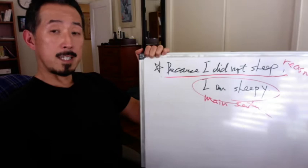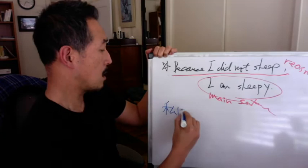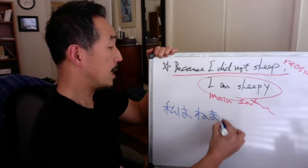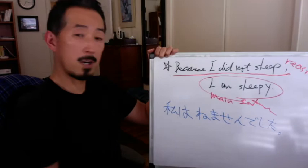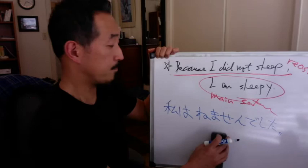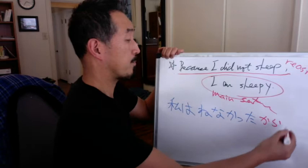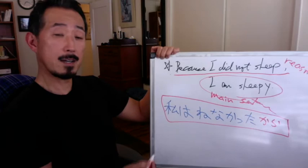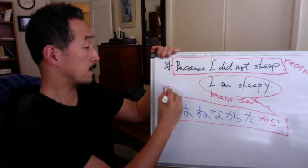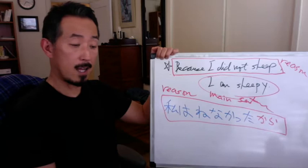Can you make this sentence: 'Because I did not sleep, I'm sleepy'? The reason is I did not sleep. 私は寝ませんでした — but you have to use short form. The short form past tense negative is 寝なかった. So: 寝なかったから. 私は寝なかったから is 'because I did not sleep.' That's the reason.